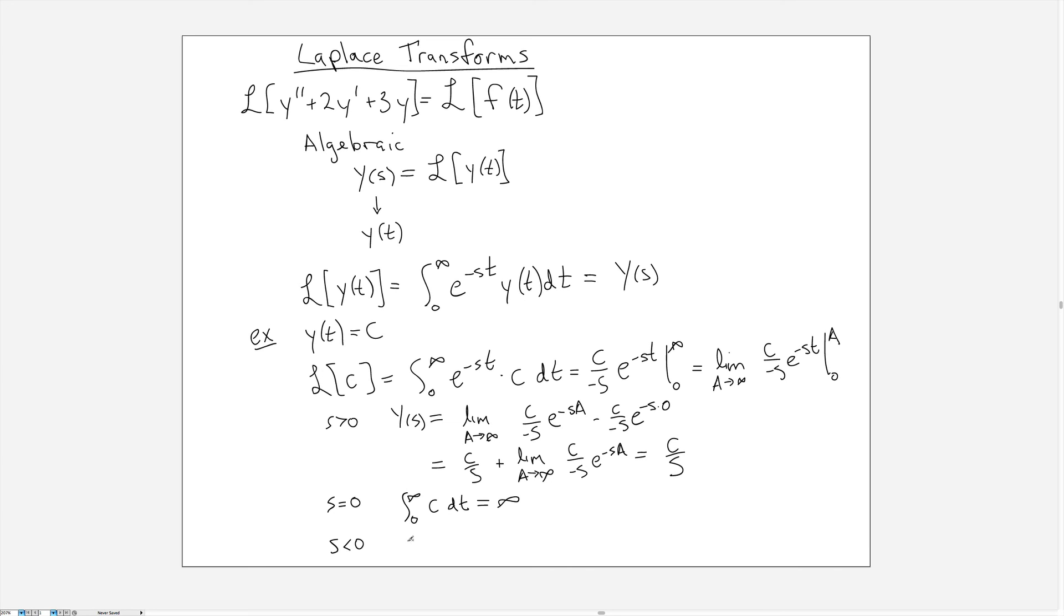So Y of S, which we defined as the Laplace transform of the constant function in this example, is equal to C over S for S positive, and does not exist or is not defined for S less than or equal to 0.